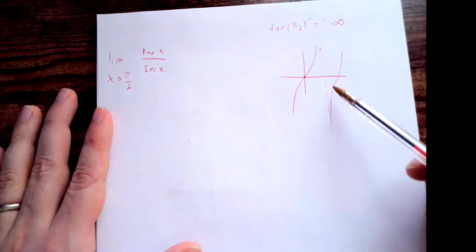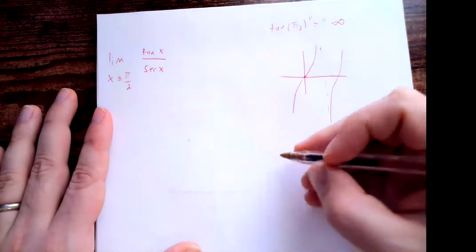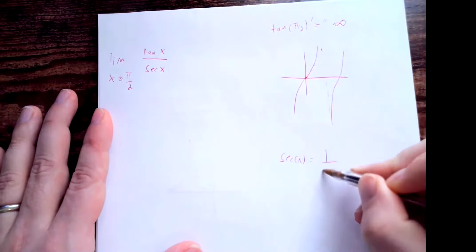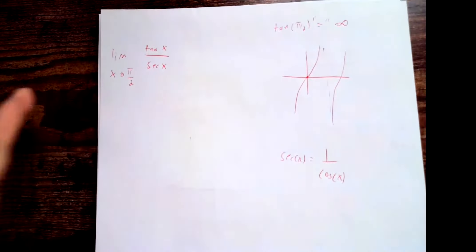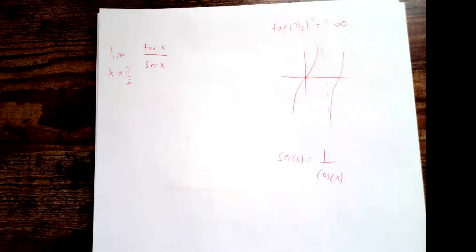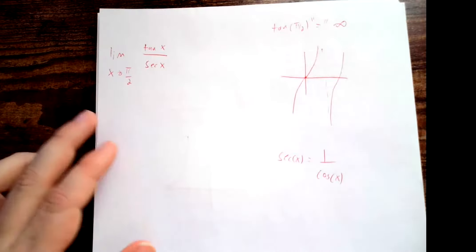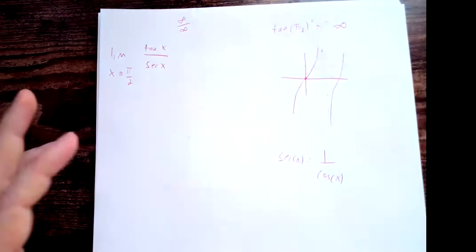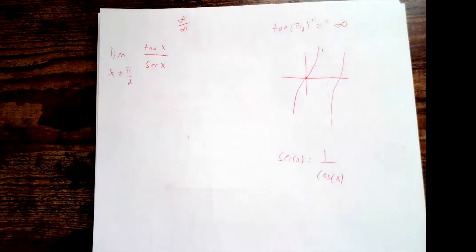The limit of tangent as x goes to π/2 from the right is actually negative infinity. Secant of x is 1/cos(x), and cos(π/2) = 0, so secant is also tending toward infinity at π/2. This looks like an indeterminate form of infinity over infinity, so we can't conclude anything about the limit just by plugging in π/2 — we need to look for algebraic simplification.